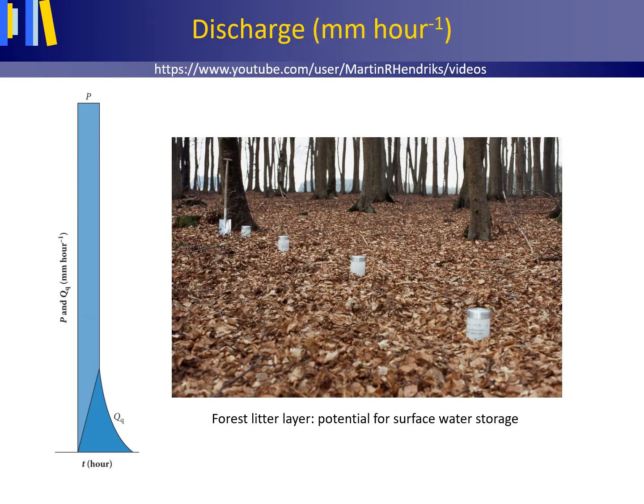Importantly, a discharge presented in millimeter per hour is not a velocity, as it may seem at first glance, but a discharge in cubic meters per hour adjusted for the drainage basin area by dividing by the total drainage basin area in square meters and multiplying by 1000 millimeter per meter.